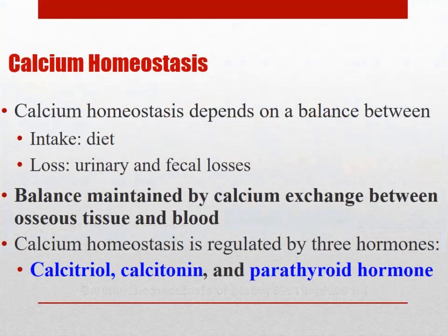Here are our three main players. Make yourself a list with calcitriol, calcitonin, and parathyroid hormone. For each one, note the function, the stimulus, and where it comes from. We'll fill this all in — about eight slides that can get pretty confusing. But this is what you need to know: function, stimulus, and origin.